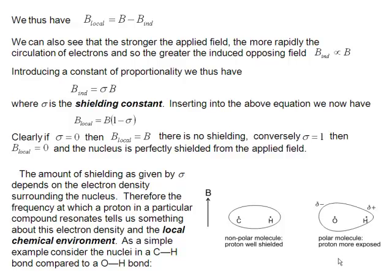On the other hand, you can imagine that if the shielding was entirely effective, then in that case sigma would be equal to 1, and then the nucleus would not see a magnetic field at all. So B_local would be equal to 0.